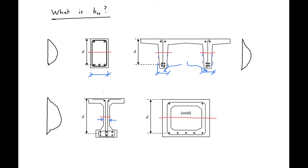And in a box section, our BW will be equal to the sum of the two outside legs of our box. So that's how we find our BW of different sections.